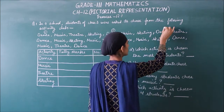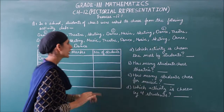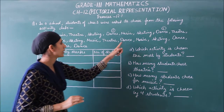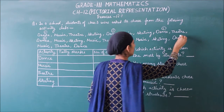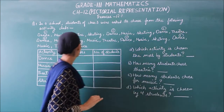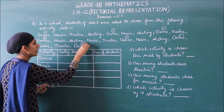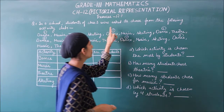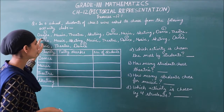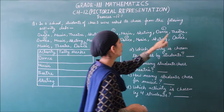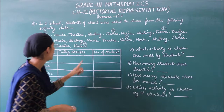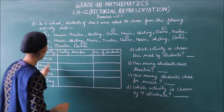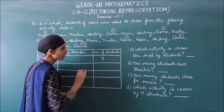Let's start with the dance section. Going through the data, we find dance entries. Counting all dance entries: 1, 2, 3, 4, 5, 6, and 7. So the number of students in dance is 7.